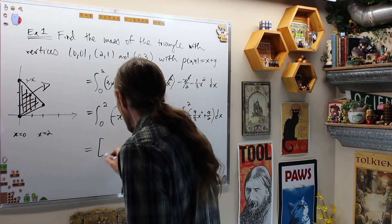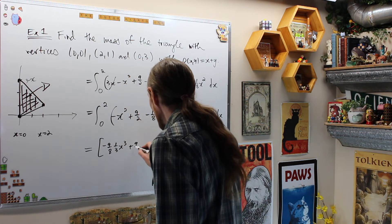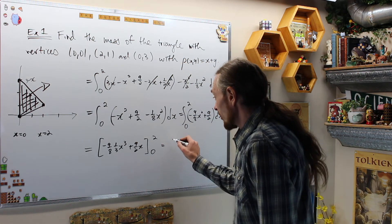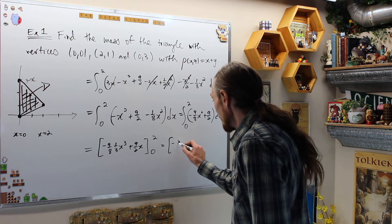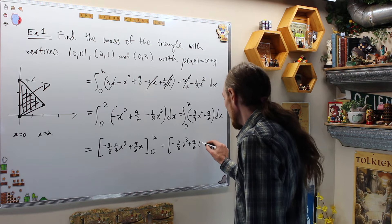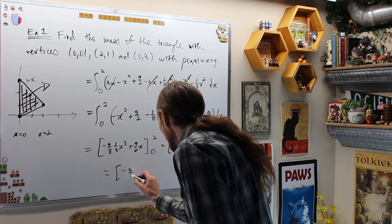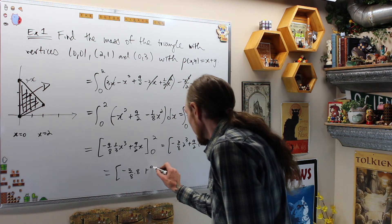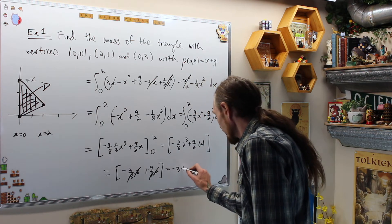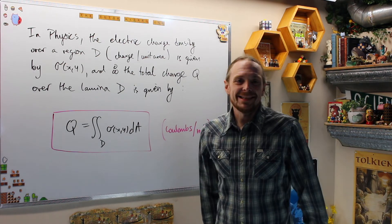That equals [−(9/8)·(1/3)x³ + (9/2)x] evaluated from 0 to 2, which gives −(3/8)·8 + (9/2)·2 = −3 + 9 = 6. So the mass is 6.